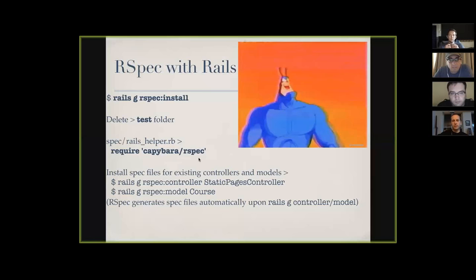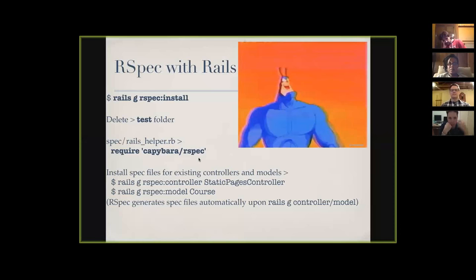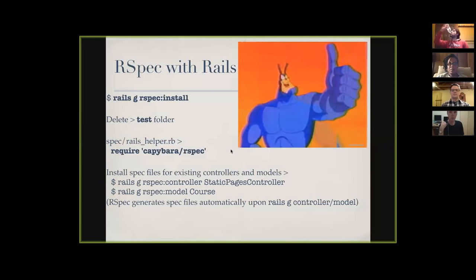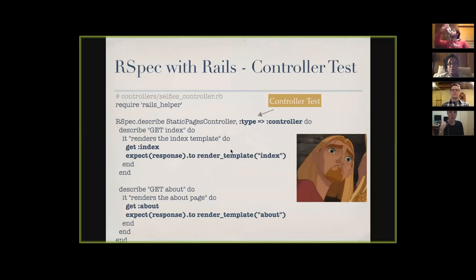For Capybara, you need to go to `spec/rails_helper` and add the Capybara require. Capybara is basically feature testing — you can actually go to different pages, click on different things, and make sure everything works the way you expect.